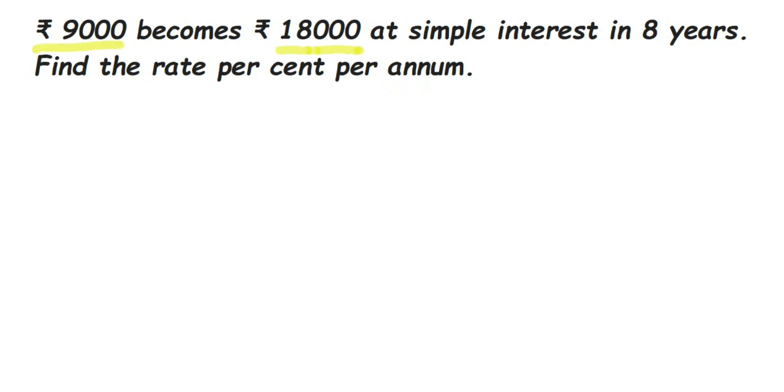...within 8 years, and we have to find out the rate here. Since 9,000 becomes 18,000 at simple interest in 8 years, time is given as 8 years, and amount is 18,000. This is including interest, right? Principal and interest included is 18,000. We have to find out R here.